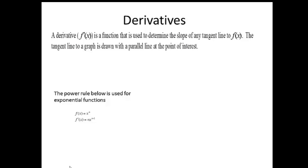Derivatives. That's why I wanted to leave a little extra time for that. Derivatives are important in physics because we deal with a lot of graphs in physics. And a derivative is directly related to a graph. A derivative we call f prime x is a function that is used to determine the slope of any tangent line of a function f sub x. The tangent line to a graph is drawn with a parallel line at the point of interest.